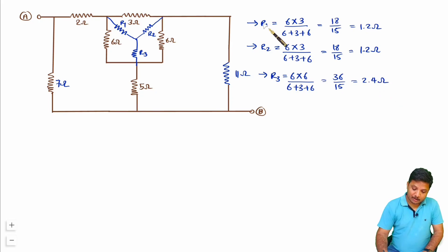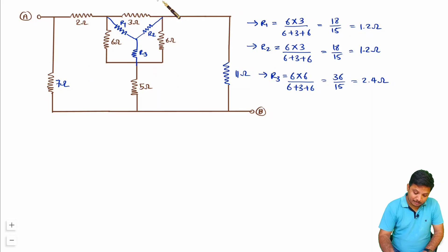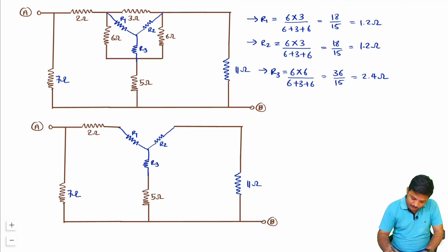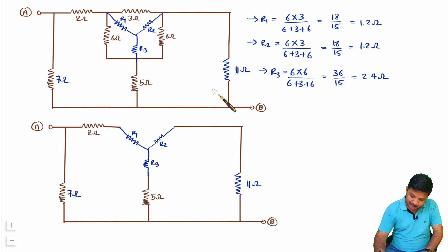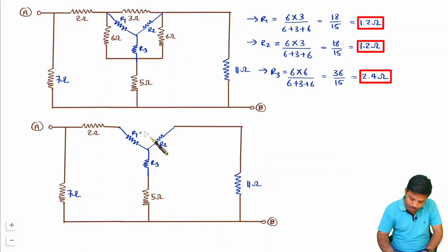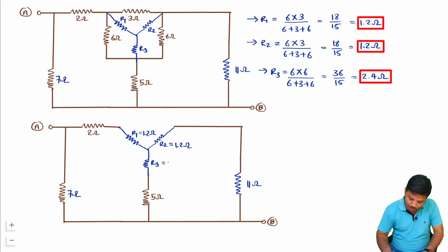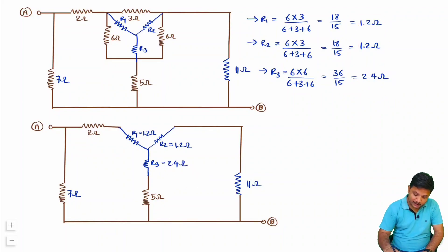Now we have the values of R1, R2, and R3. I just need to replace this delta connection in terms of the star connection. Let me redraw this circuit. Now we have R1 equal to 1.2 ohm, R2 equal to 1.2 ohm, and R3 equal to 2.4 ohm. That is how I have replaced this delta into star.